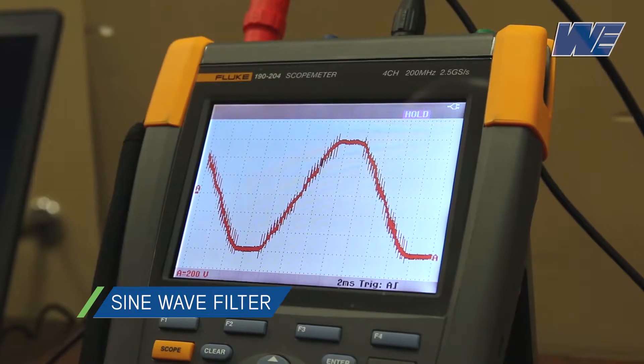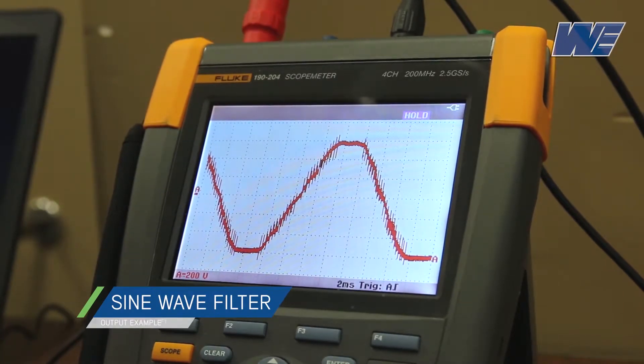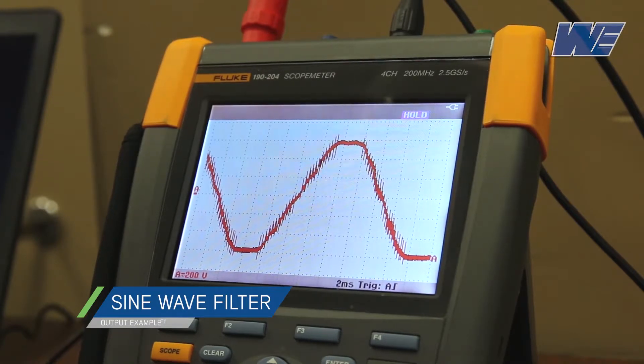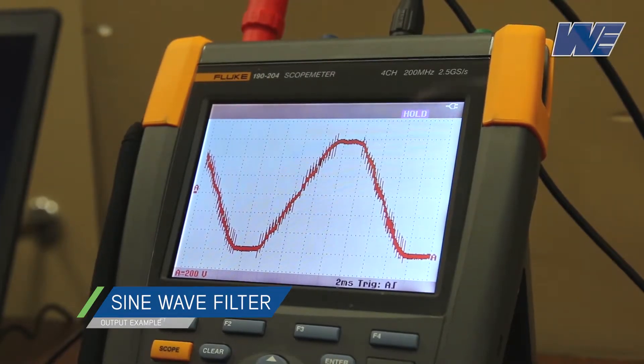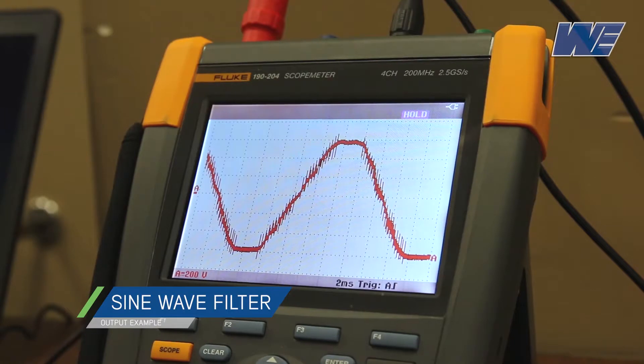Okay, now we've inserted the sine wave output filter between the drive and the motor. Again, there's 500 feet of cable between the drive and the motor. We are on 2 milliseconds per division.